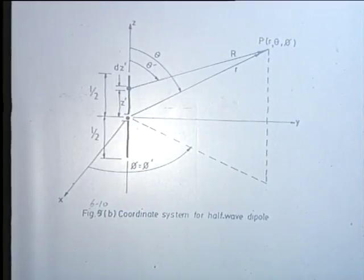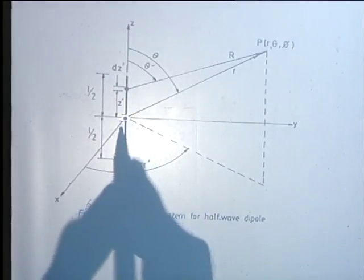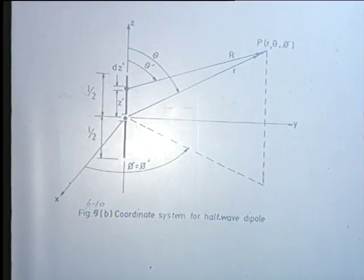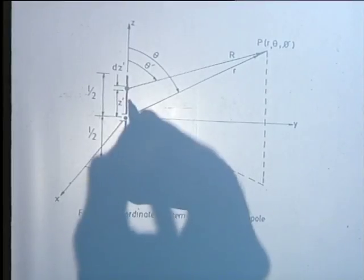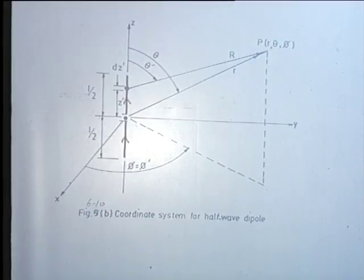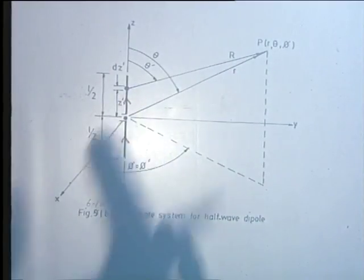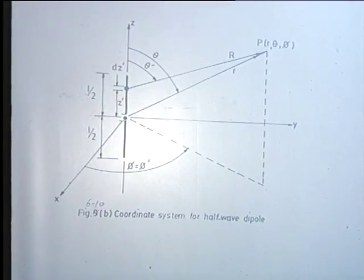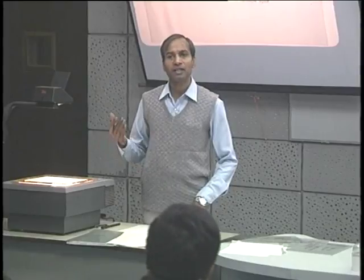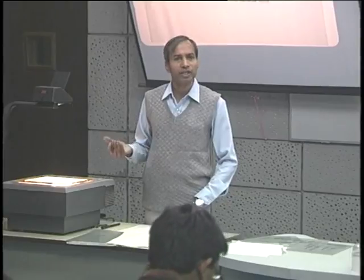The dipole antenna is fed through a transmission line, and there will be current on the two arms of the antenna, which is similarly directed in both arms. Before we find the vector potential and corresponding magnetic field, electric field, and radiated power, we require the current distribution on the antenna itself, without which we cannot find the vector potential A.